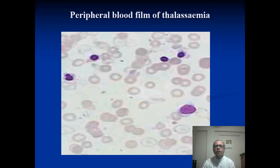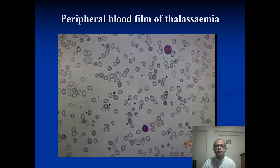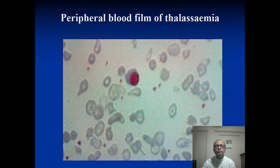This is the peripheral blood film of thalassemia. You can see nucleated RBCs, hypochromia, fragmented red blood cells, and target cells. This also shows hypochromic microcytic anemia features with fragmented red blood cells, nucleated RBCs, polychromatic cells, and target cells — characteristic findings of beta-thalassemia on the blood film.